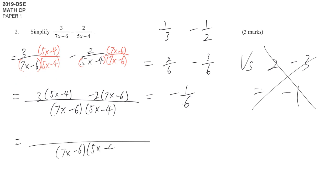So the numerator, we just simplify it. 15x, negative 4 times 3 is 12. Negative 2 times 7x is negative 14x. Negative 6 times negative 2 gives you positive 12. We find that minus 12 and plus 12 becomes 0. So the answer is 1x in the numerator.